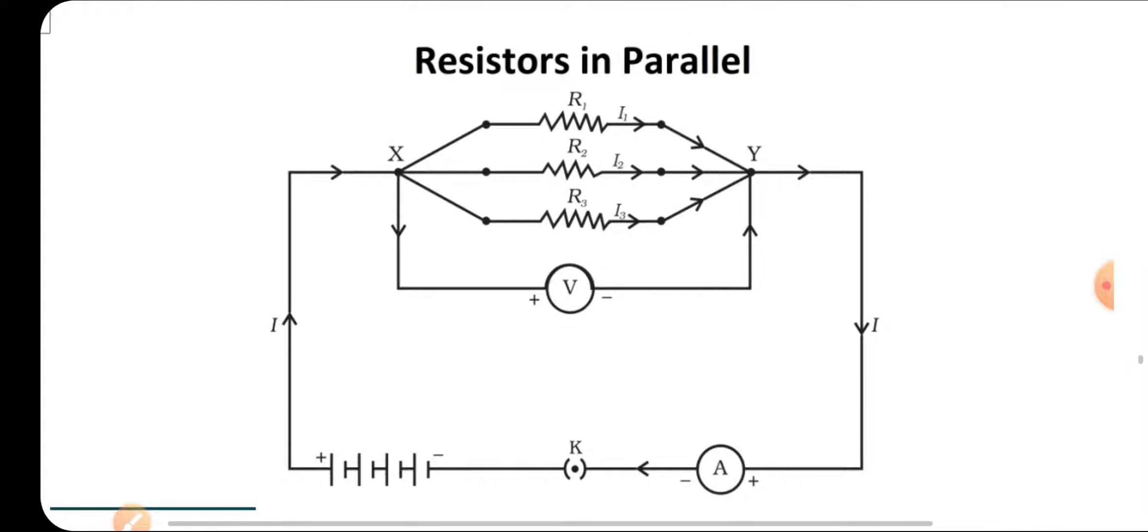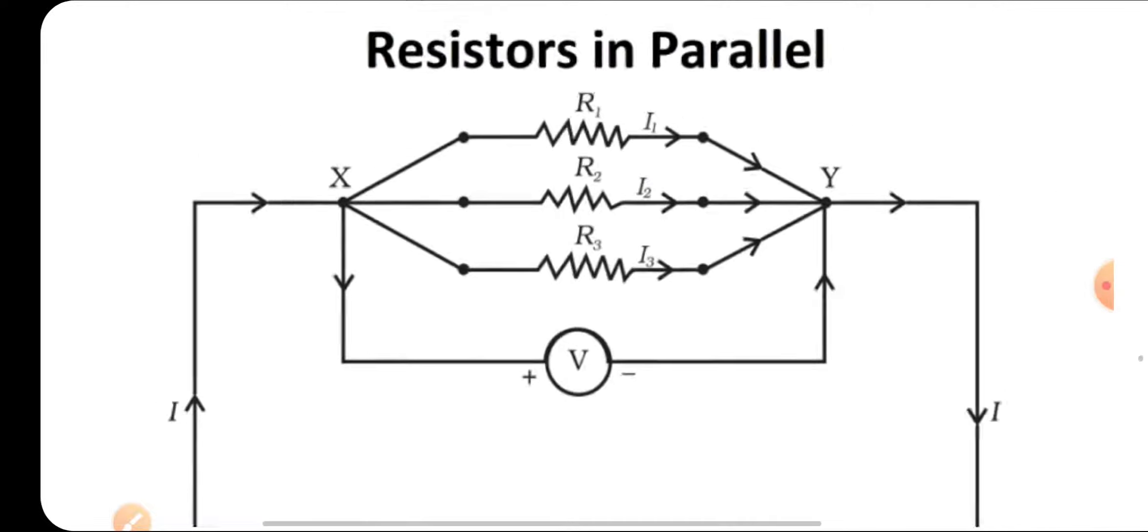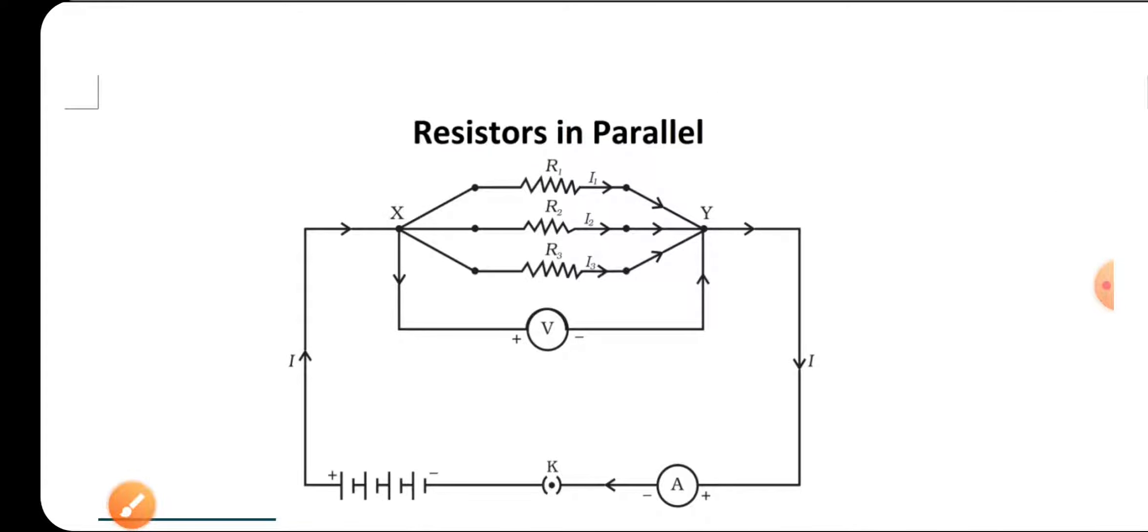When R1, R2, and R3 are connected in parallel combination, we connect them at key points in three different parts. The potential difference across terminals will be the same - R1 gets V at key points, R2 gets V, and R3 gets V. In this case, they all have the same voltage.